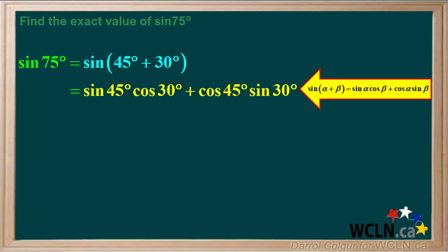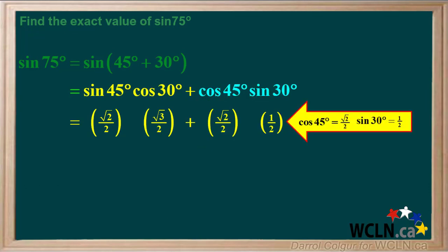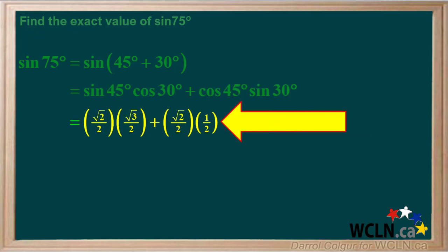Using the identity sin(α + β) = sin α cos β + cos α sin β, we can write sin 45° cos 30° + cos 45° sin 30°. The sine of 45 degrees is √2/2 and the cosine of 30 degrees is √3/2. So we're left with this expression.